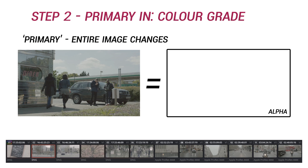The next step is to start applying the creative color grade. This could also be referred to as a primary stage or primary in, because it refers to changing the hue and luminance of the entire frame, but this time for creative purposes. So you start introducing colors, you start playing around with contrast in a way that's not necessarily a natural representation of the environment.